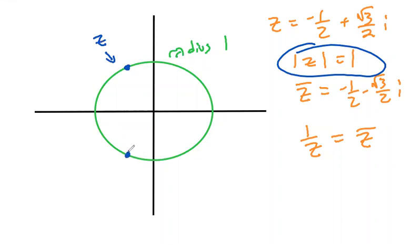And how do we find the conjugate of z? You simply reflect over the x-axis. This is the conjugate of z. So we keep the same real part and the imaginary part goes from plus root three over two i to minus root three over two i.